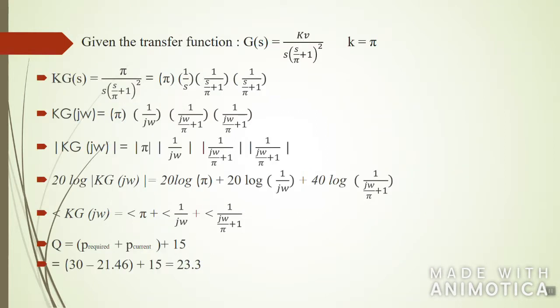Given that the transfer function G(s) equals Kv over s multiplied with (s over π plus 1) to the power of square, we know that k is given equal to π. So substituting, KG(s) equals π over s times (s over π plus 1) squared. In these following steps we do this for anyone who wants to solve this equation manually. It becomes π multiplied with 1 over s multiplied with 1 over (s over π plus 1) times 1 over (s over π plus 1).